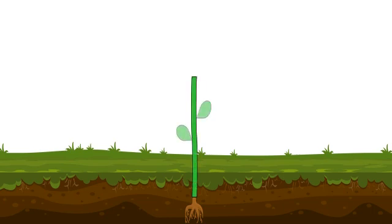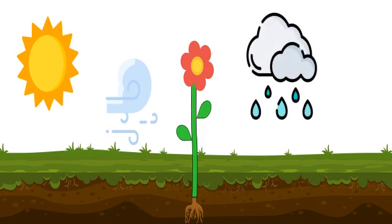Roots, stem, leaves, flower needs sun and air and a little rain shower.